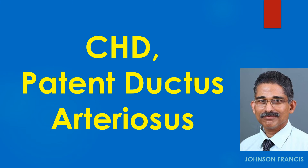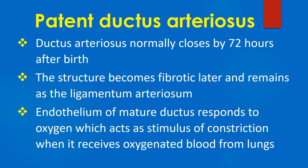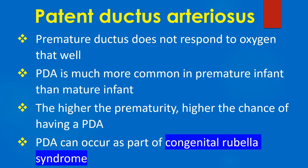This lecture is on congenital heart disease: patent ductus arteriosus. Ductus arteriosus normally closes by 72 hours after birth. The structure becomes fibrotic later and remains as the ligamentum arteriosus. The endothelium of a mature ductus responds to oxygen, which acts as the stimulus for constriction when it receives oxygenated blood from the lungs. A premature ductus does not respond to oxygen as well.